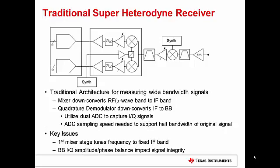Key issues here are that we have our first mixer stage that tunes an RF frequency down to an IF band, and the quadrature demodulator that has the IQ path — we have amplitude and phase balance issues with the quadrature demod that can impact signal integrity.